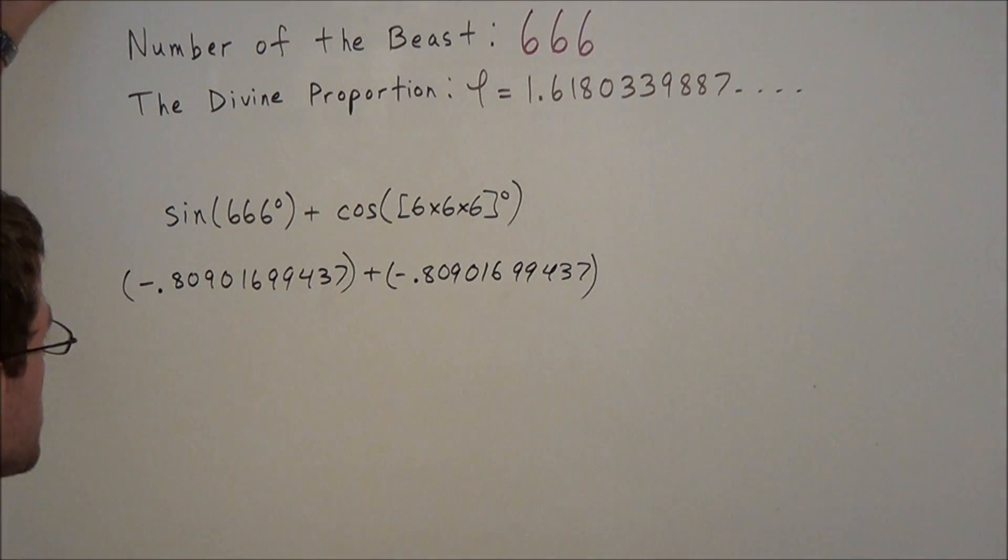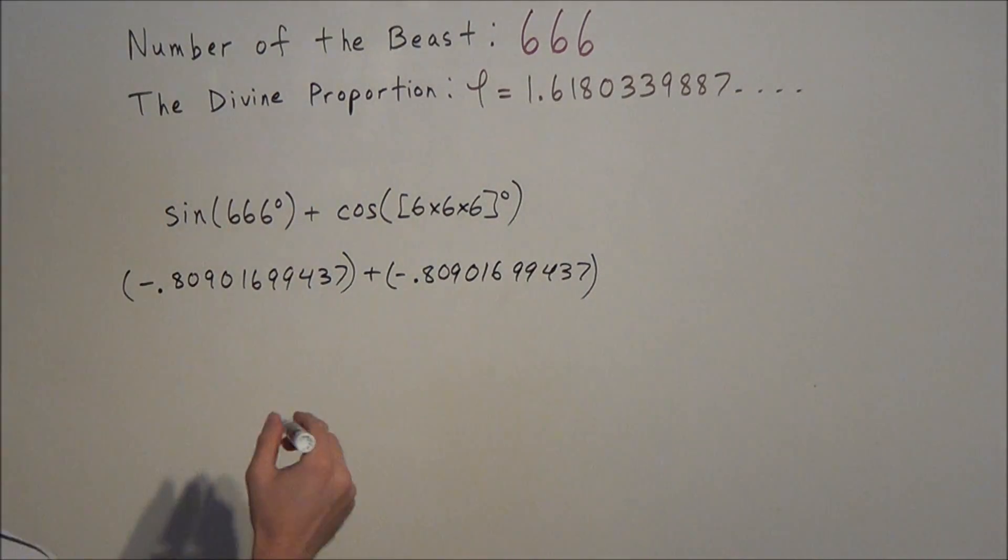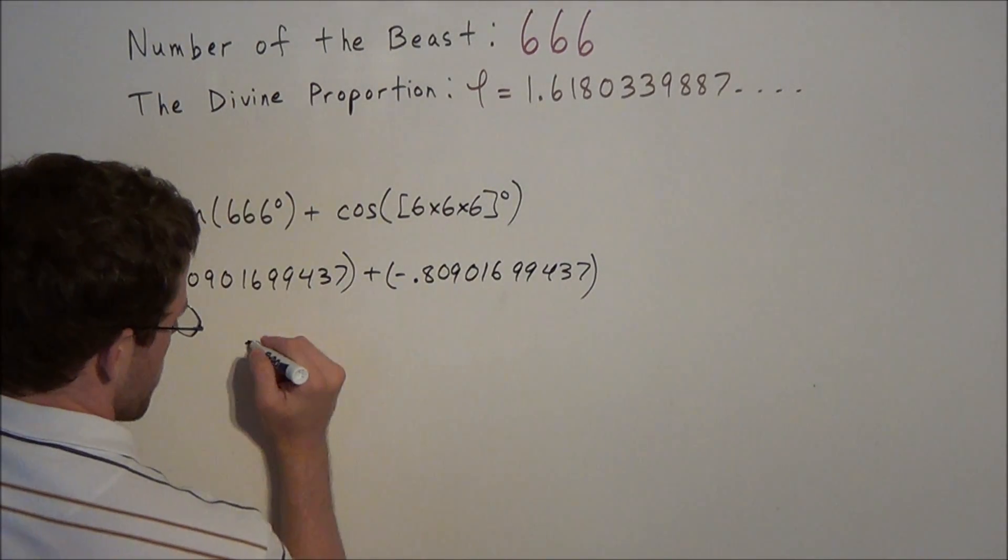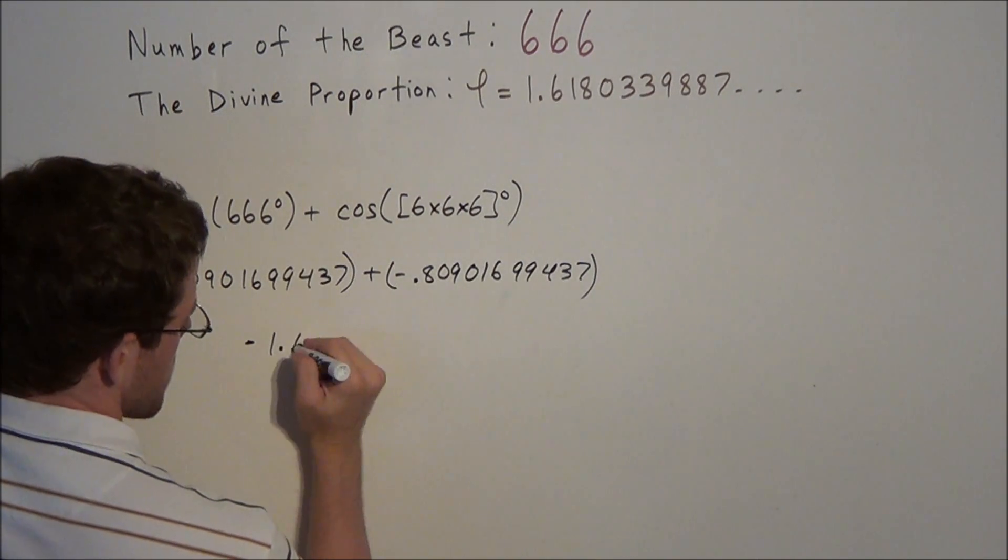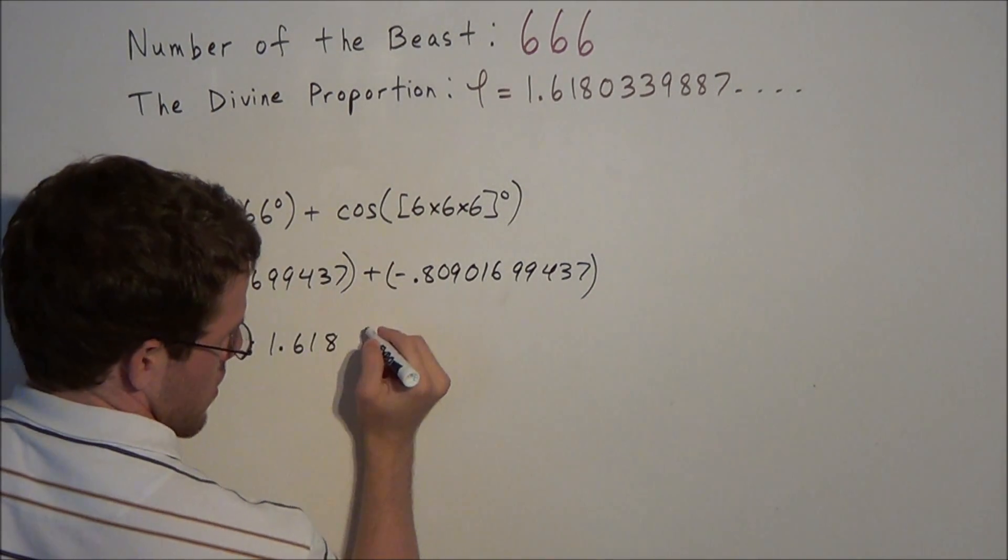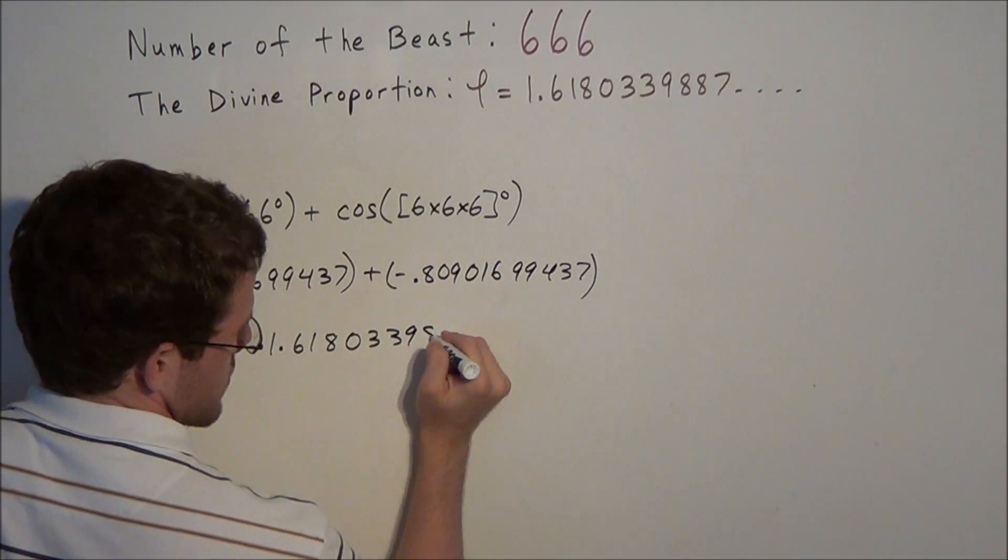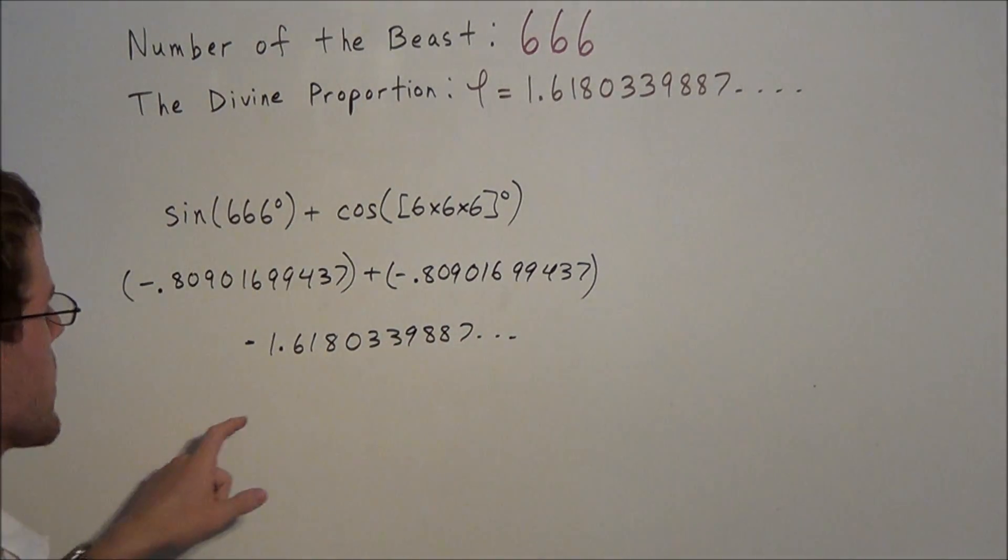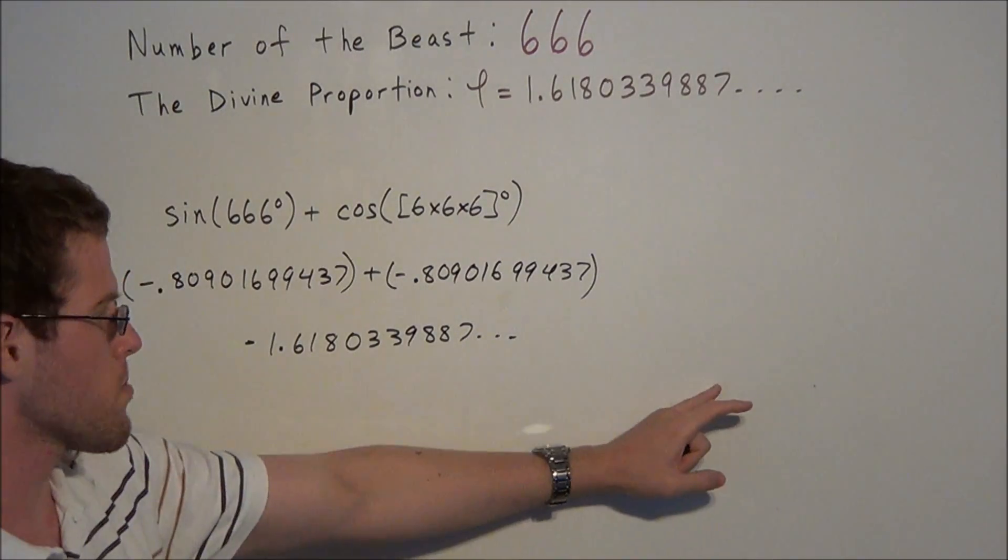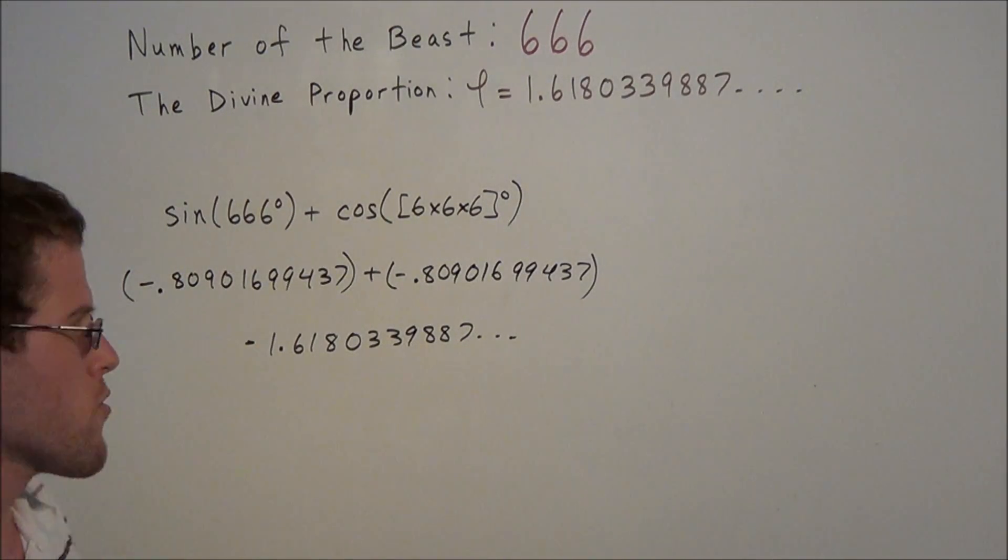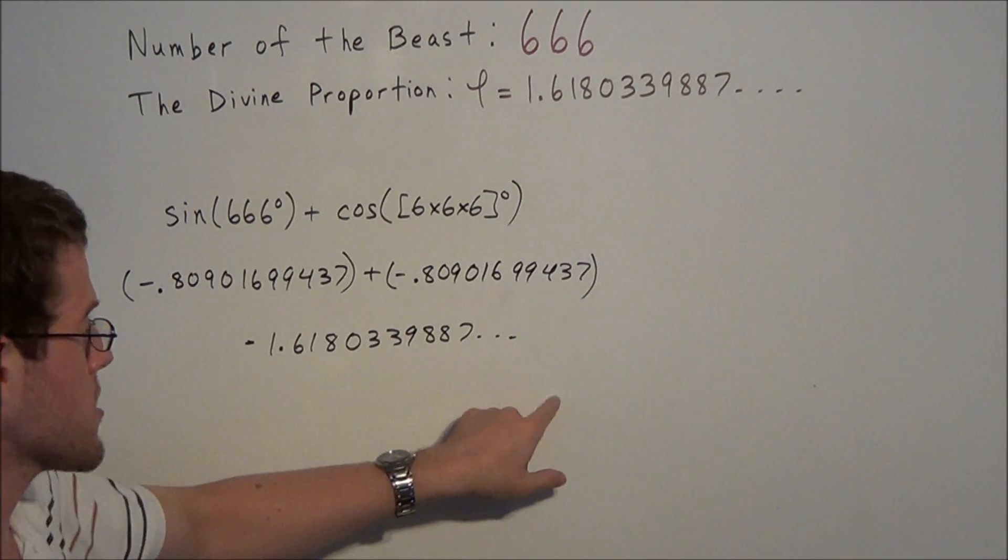So now when we add these two numbers together, the result will be negative 1.6180339887. And now this decimal will continue on for a few more places. It may continue on forever, but I'm pretty sure that this decimal terminates.